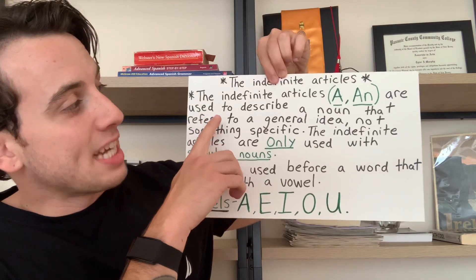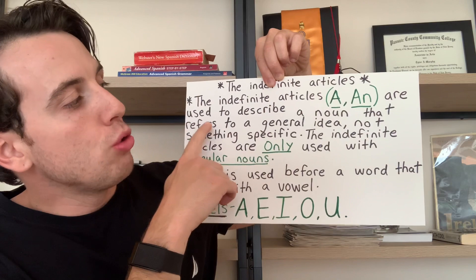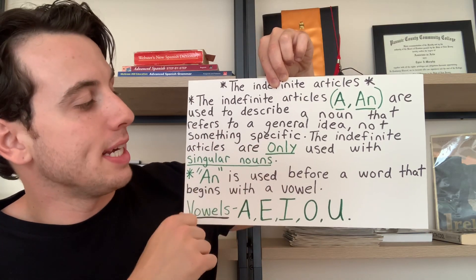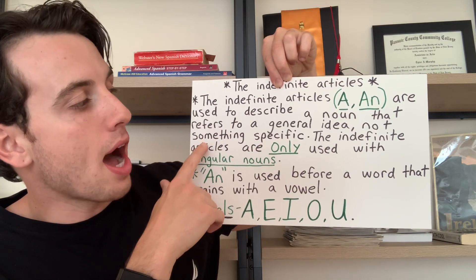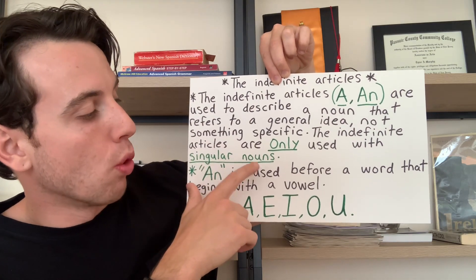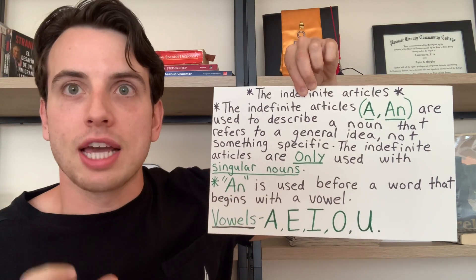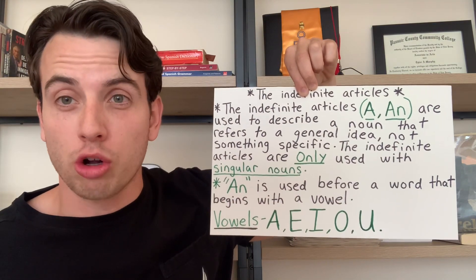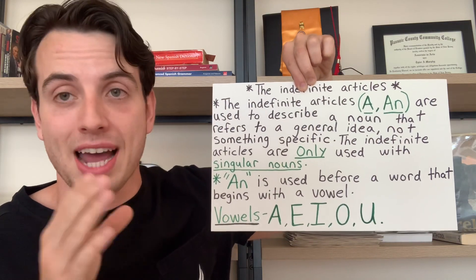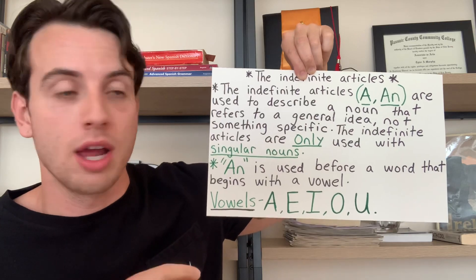The indefinite articles, 'a' and 'an,' are used to describe a noun that refers to a general idea, not something specific. The indefinite articles are only used with singular nouns. If you would like to use the indefinite article plurally, we would use the word 'some,' but not 'a' or 'an' — that's only for singular nouns.